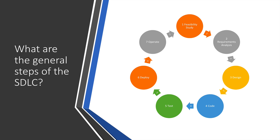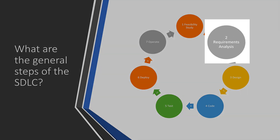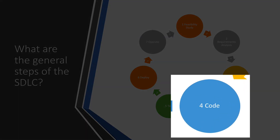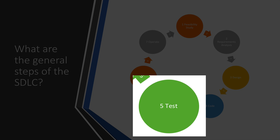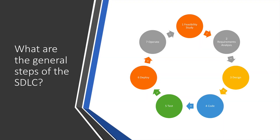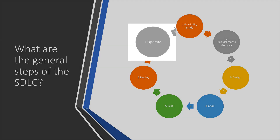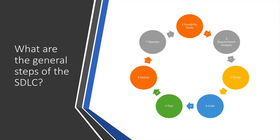So what are the general steps of the SDLC? The first step is a feasibility study. Step two is the requirements analysis. Following that is the design phase. Next is the coding phase, which we're all mostly familiar with, when programmers are actually producing code. Followed by that is the testing stage. Once testing has been successfully completed, we move on to a deployment stage where code is actually put into production. And the final stage is the operational stage, where maintenance teams and support desk people are supporting the operating software.